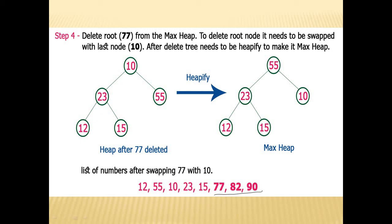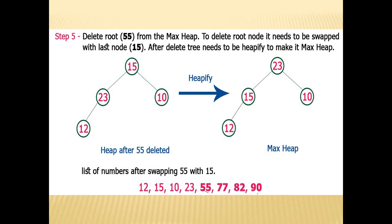After removing 77, we need to heapify again. The max element among the children is 55, so replace 10 with 55. Then 55 becomes the root. We remove 55 next and replace it with 15. Again it is not following heap property; among the children, 23 is the maximum, so replace with that. Now 15 is adjusted and everything is heap.